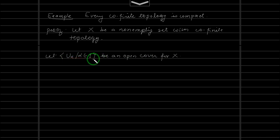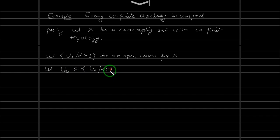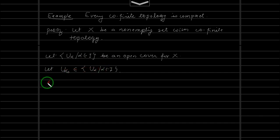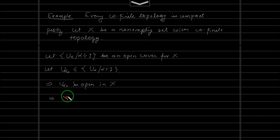To show that this has a finite sub-cover, let us take one element from this open cover — say U_{α₀}, one element from the collection {U_α : α ∈ I}. Since this is an open cover for X, X is contained in the union of all U_α's. Now U_{α₀} is open in X, and X has the co-finite topology. This implies the complement of U_{α₀} must be finite. So the complement of U_{α₀} is finite.